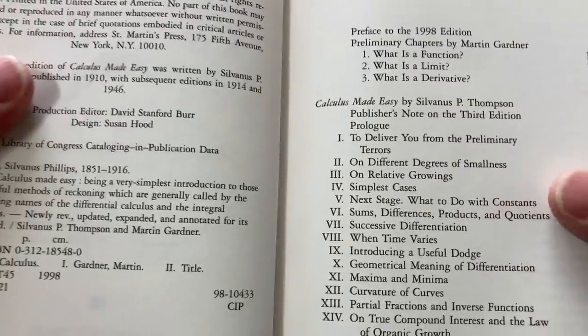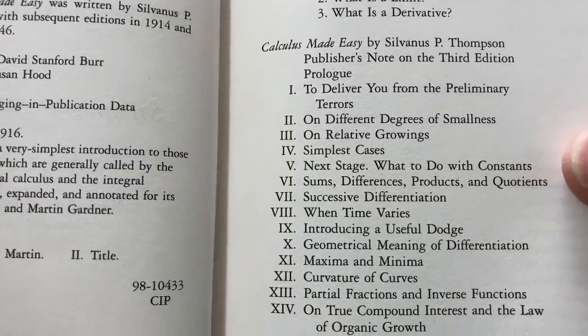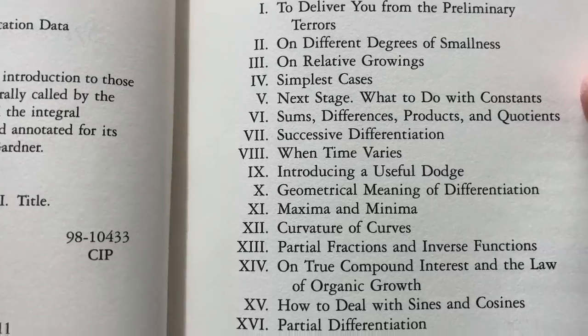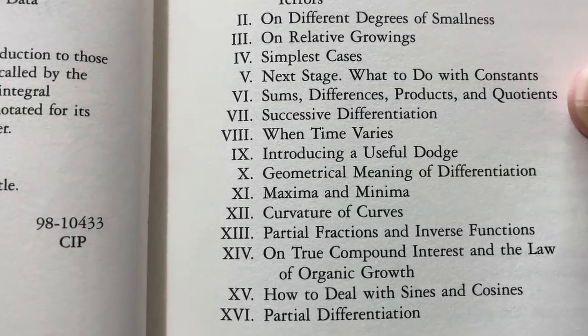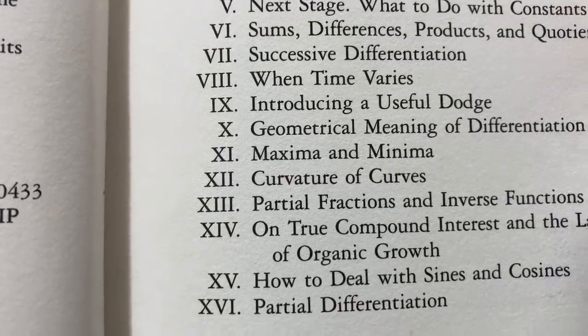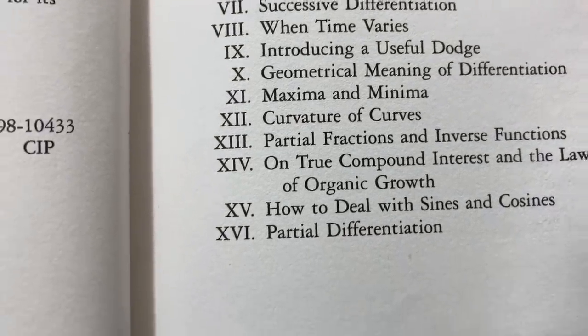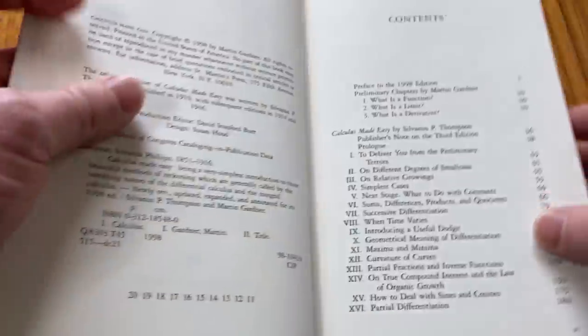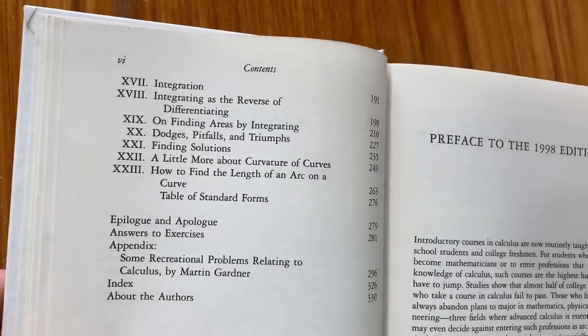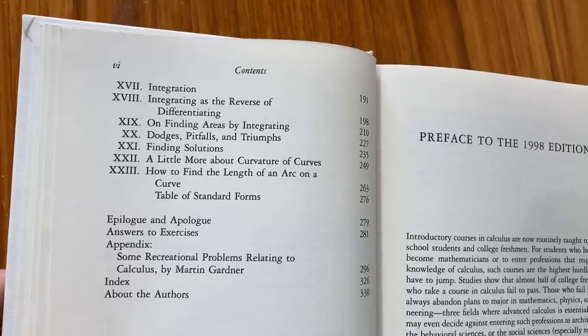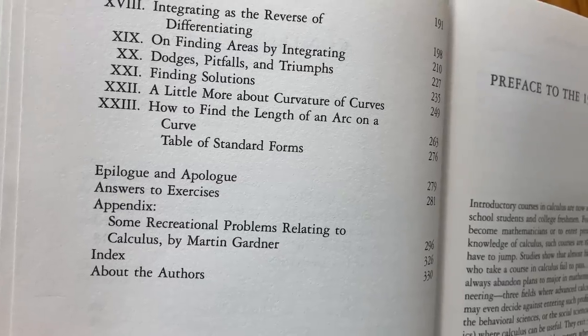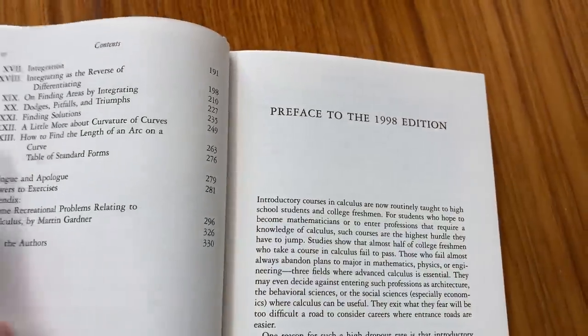Let's take a look at the contents. To deliver you from the preliminary terrors on different degrees of smallness, on relative growings, simplest cases, next stage, what to do with constants, sums, differences, products and quotients, successive differentiation when time varies, introducing a useful dodge. I love the choice of words. And there you can see the rest. It even talks about partial differentiation, which is really cool. Here's some more of the contents. Integration. Integrating is the reverse of differentiation. On finding areas of integrating. Dodges pitfalls and triumphs. Finding solutions. A little more about curvature of curves. How to find the length of an arc on a curve. And it has answers to the exercises. So, really beautiful book.